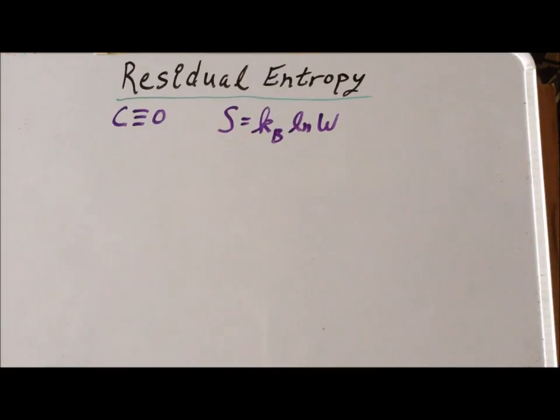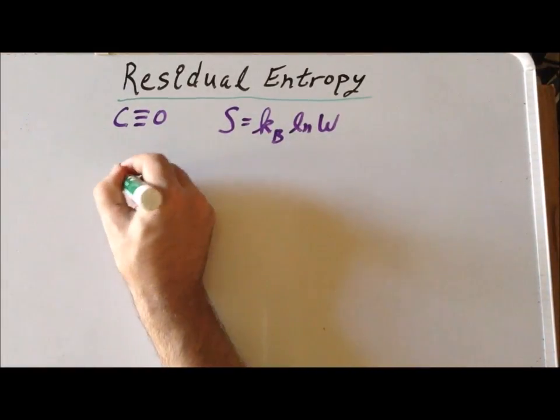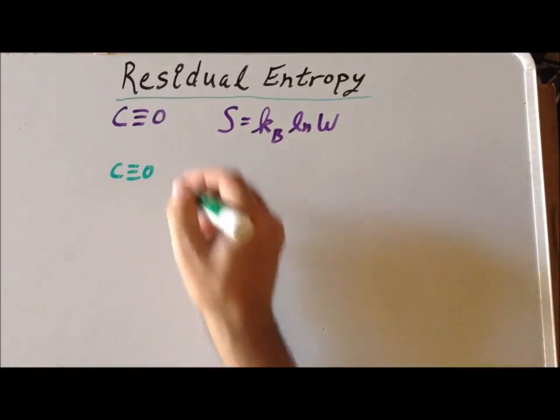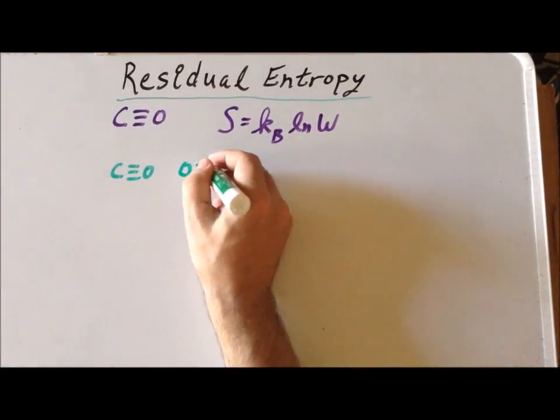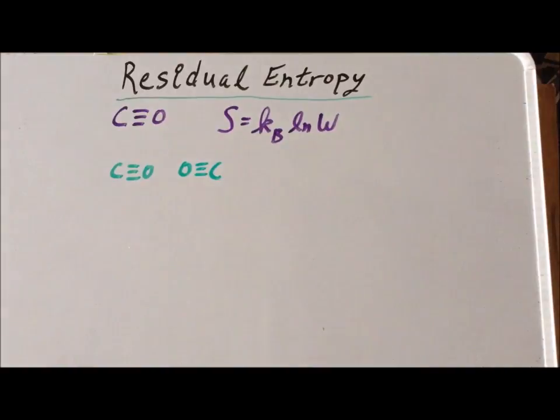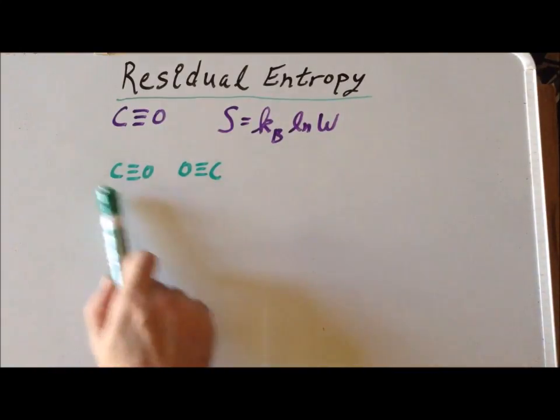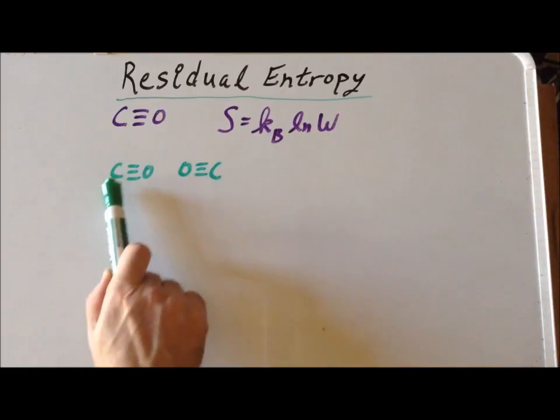So if we have simply one carbon monoxide atom, we can arrange it with the carbon to the left, or we can arrange it with the oxygen atom to the left. So there are two possible configurations. Similarly, if I bring in a second carbon monoxide molecule, the first can have any one of two possible orientations. And the second one can have either of two possible orientations.